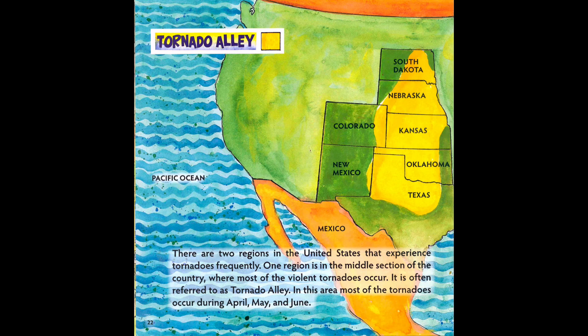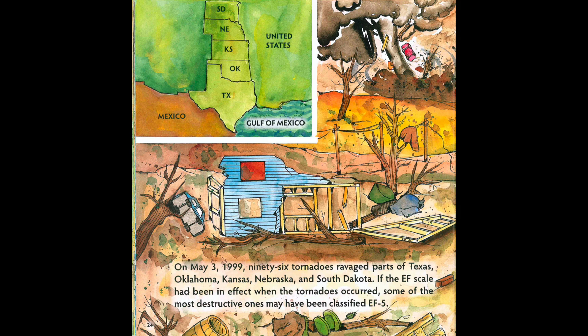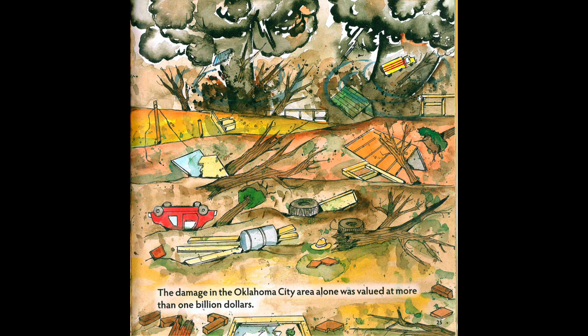Tornado Alley. There are two regions in the United States that experience tornadoes frequently. One region is in the middle section of the country, where most of the violent tornadoes occur — it is often referred to as Tornado Alley. Most of the tornadoes there occur during April, May, and June. The other is the state of Florida, where most tornadoes occur during January, February, and March. The United States has about 1,200 tornadoes a year, more than any other country. On May 3rd, 1999, 96 tornadoes ravaged parts of Texas, Oklahoma, Kansas, Nebraska, and South Dakota. If the EF scale had been in effect, some of the most destructive ones may have been classified EF5. The damage in the Oklahoma City area alone was valued at more than 1 billion dollars.